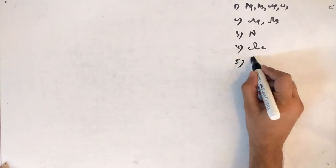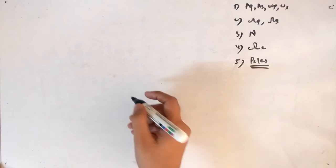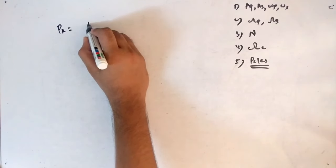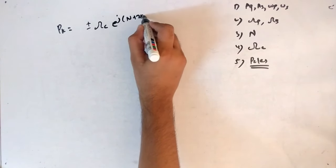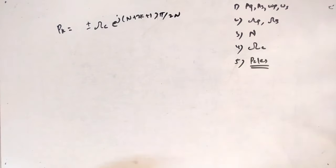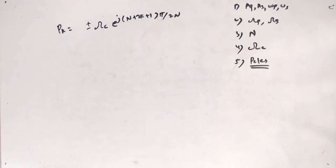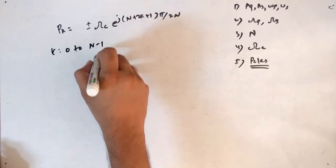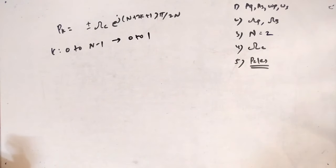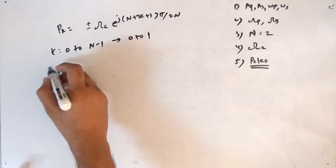The fifth point is to find the location of poles, which is needed to construct the analog filter. The formula is: pk = ±Ωc · e^[j(n + 1 + 2k)π / 2n]. The range of k is 0 to n−1. Since n = 2, k ranges from 0 to 1, giving 2 values of k. The ± sign means each value of k produces a conjugate pair, so we get 4 poles total.